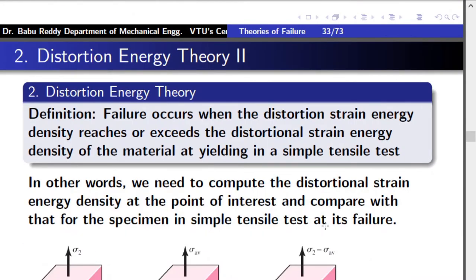The definition of the distortion energy theory states: failure occurs when the distortion strain energy density reaches or exceeds the distortion energy density of the material at yielding in a simple tensile test. Instead of measuring tau max as in maximum shear stress theory, here we measure what is known as strain energy density, denoted UD, measured in joules per meter cubed.